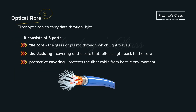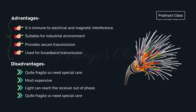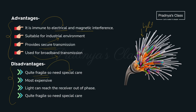The third guided medium is optical fiber, which carries data through light. It has three parts: core, cladding, and protective covering. The core, made of glass or plastic, is where light travels; the cladding covers the core; and the protective covering surrounds the whole arrangement. Advantages: immune to electrical and magnetic interference, provides secure transmission, suitable for industrial environments, and can be used for broadband transmission. Disadvantages: it is fragile and needs special care as it is made of glass, and it is expensive compared to the other two guided media.